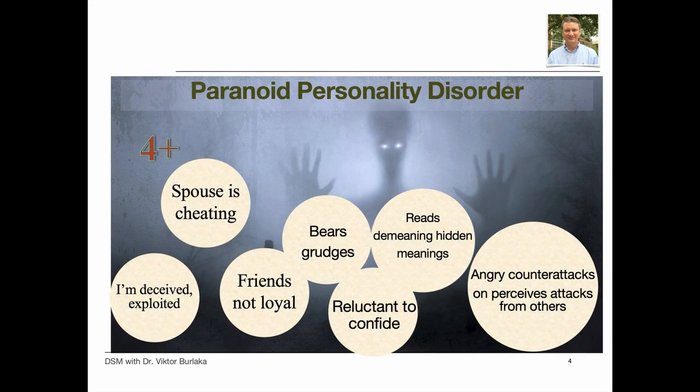People with paranoid personality disorder are suspicious and quick to take offense. They often have few close friends and may read hidden meaning into innocent remarks. They show distrust of the loyalty or trustworthiness of others, suspecting that others want to deceive, hurt, or exploit them, and hesitate to share personal information. Unjustified suspicions about the faithfulness of a spouse or partner, or misperception of hidden content in everyday events, can lead to bearing grudges or rapid responses with anger. The disorder usually begins in teens or early 20s, affects about 1% of the population, and is usually diagnosed in men.